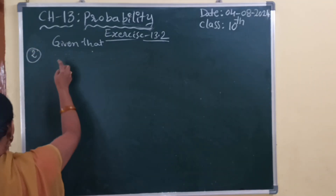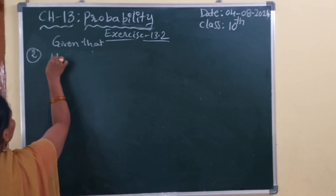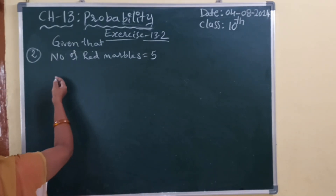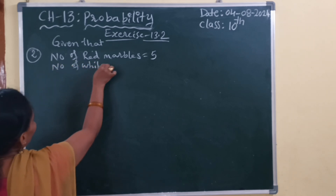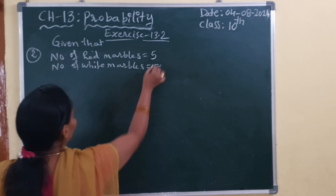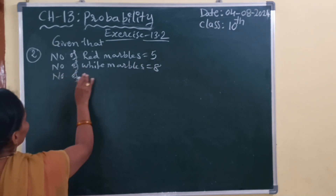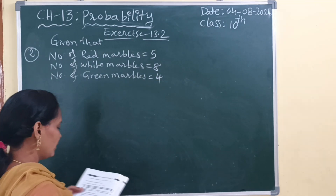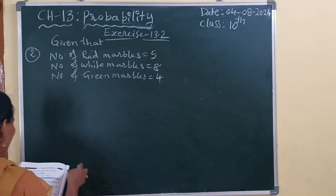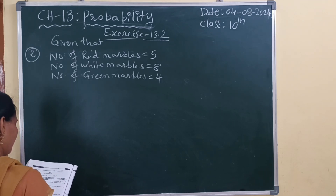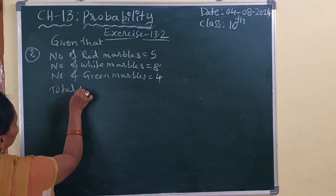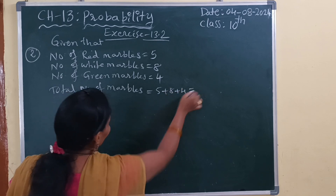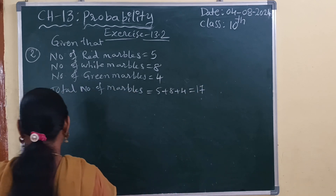Second question: given that a box contains — number of red marbles: 5. Number of white marbles: 8. Number of green marbles: 4. Before finding the probability, first we need to find out the total number of marbles: 5 plus 8 plus 4. Total number of marbles: 17.